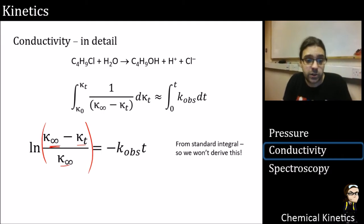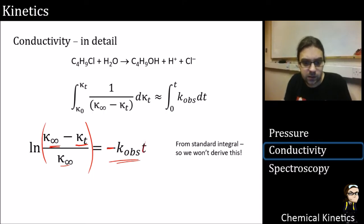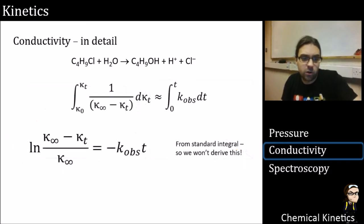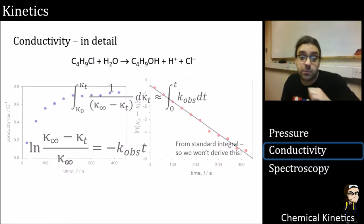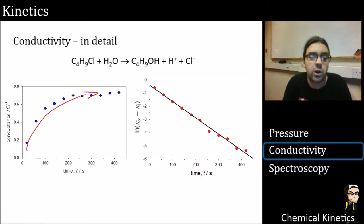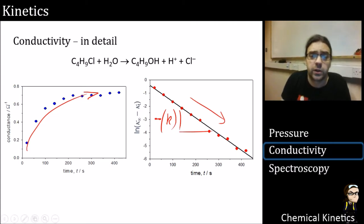The result is: log(κ_∞ − κ_t) equals −K_obs × t, which is what you'd expect from a first-order reaction. So if we plot a log of this conductivity measurement versus time, we should get a straight line. Here's some data: conductance going up gradually over time — plot the log of that and it goes straight down. The gradient gives us −K_obs, so we get our rate constant from this data.